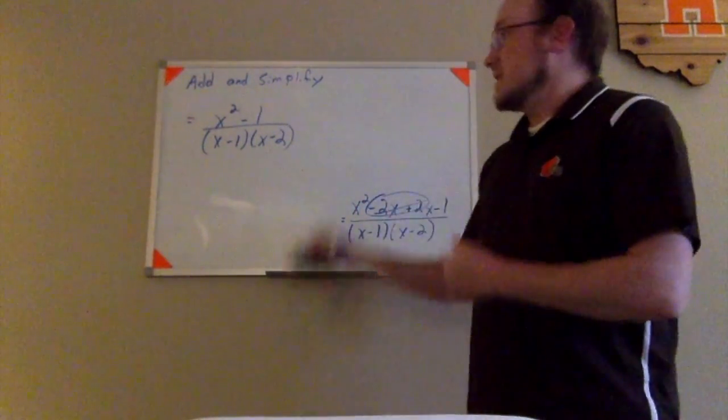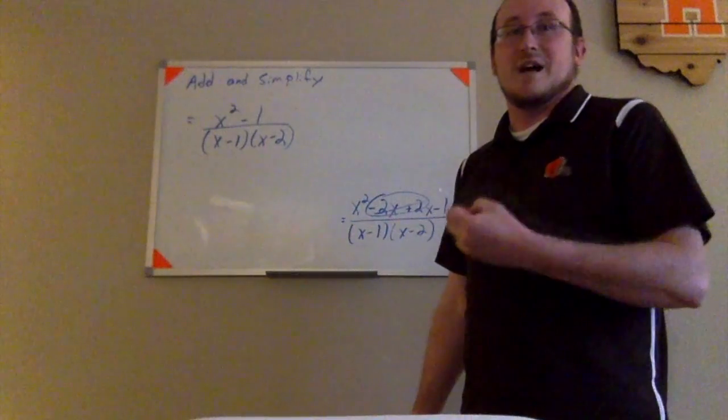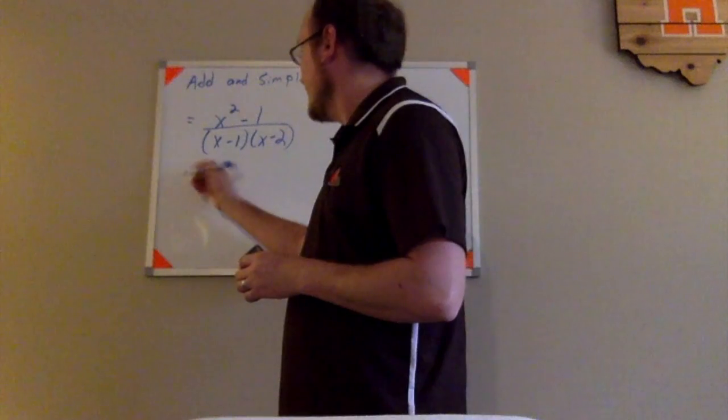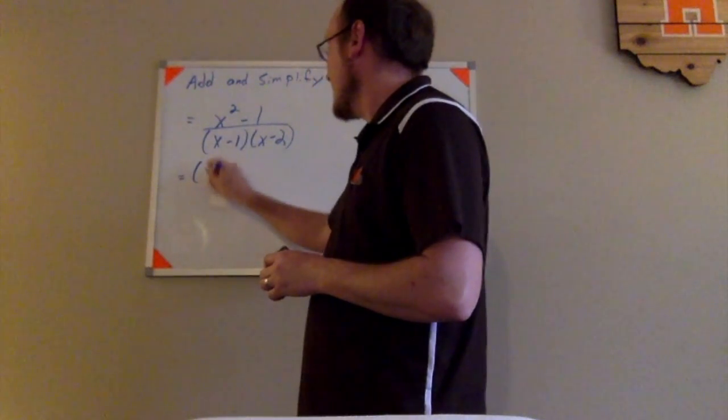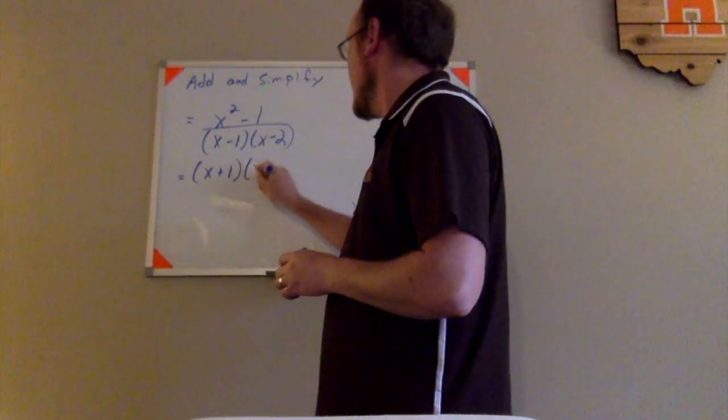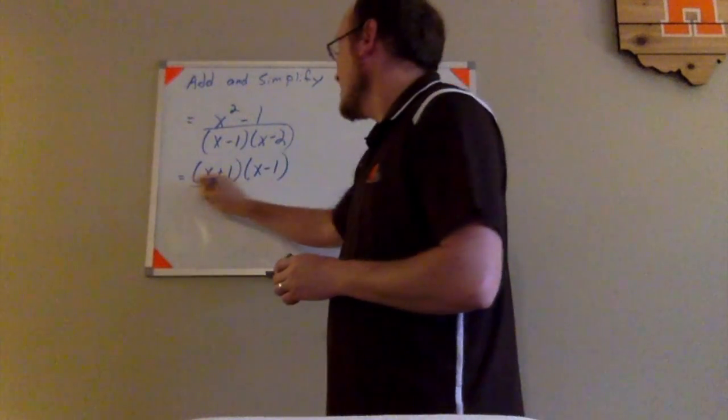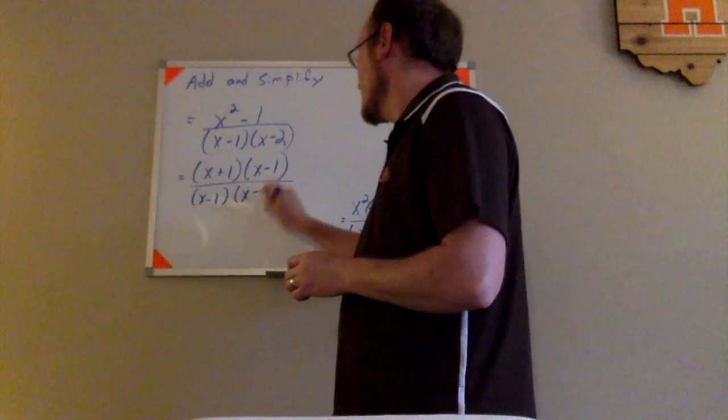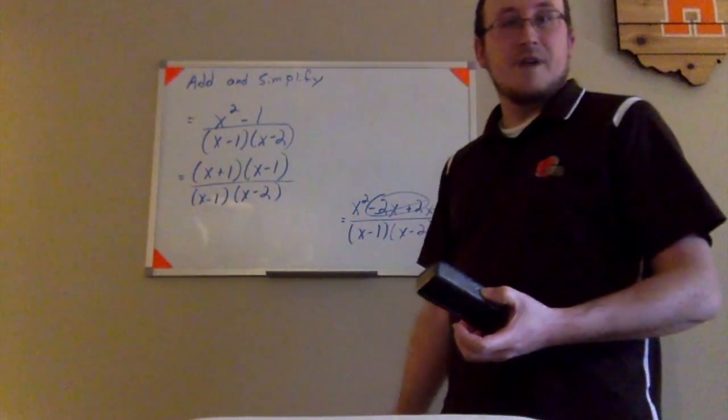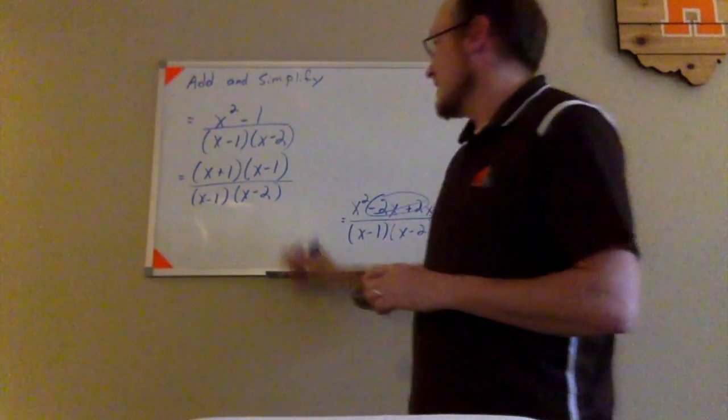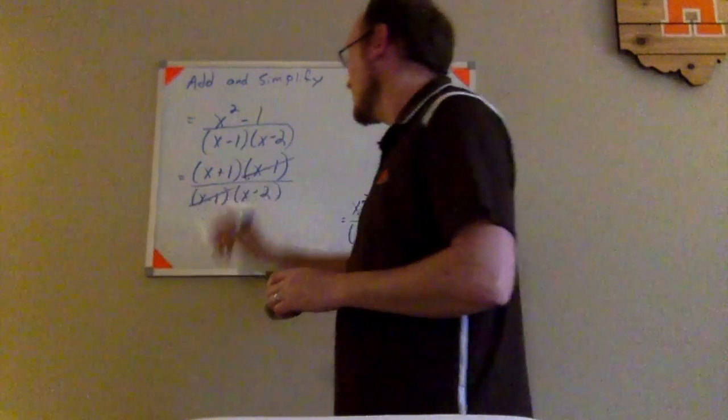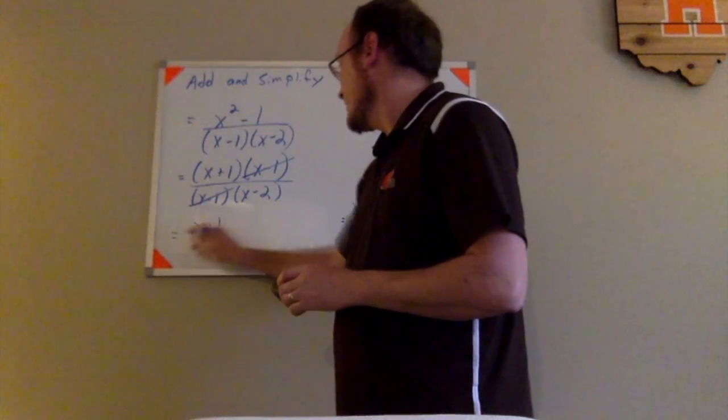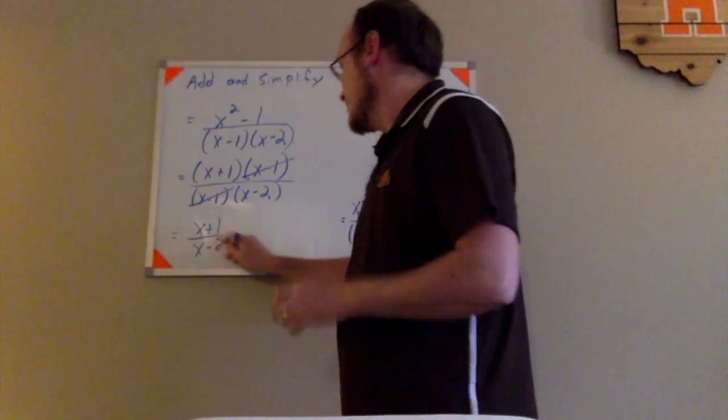Now, I don't know about you, but I see that numerator and I recognize that that's a difference of squares. I know how to factor a difference of squares, so let me do that now. That would factor as x plus 1, x minus 1. My denominator has x minus 1, x minus 2. I see a common factor in the numerator and the denominator, so that can cancel out this x minus 1 with that x minus 1. And finally, I'm left with just x plus 1 over x minus 2.